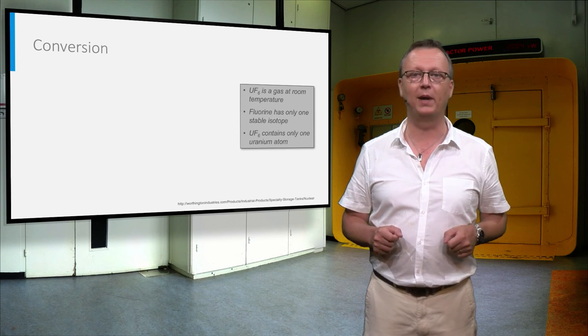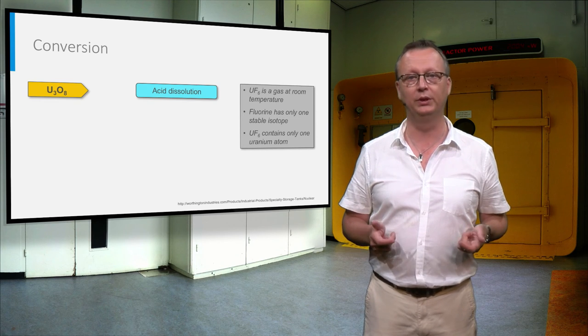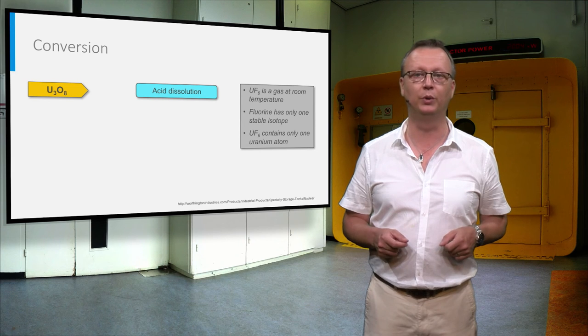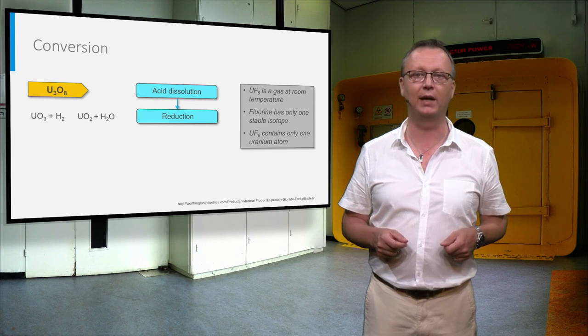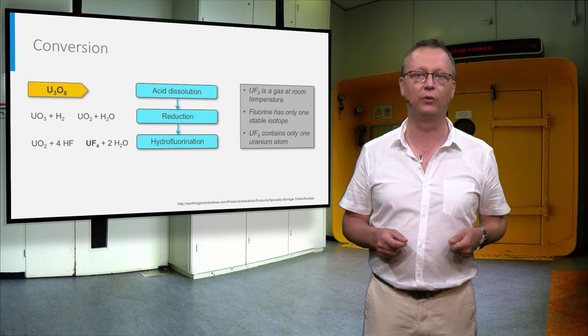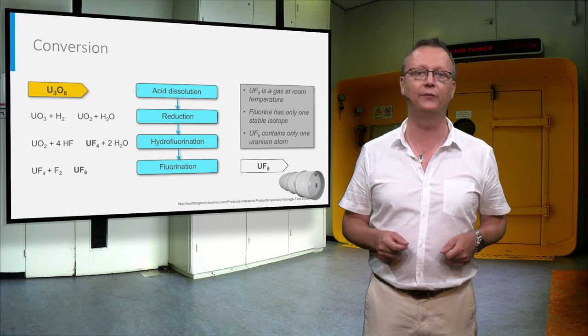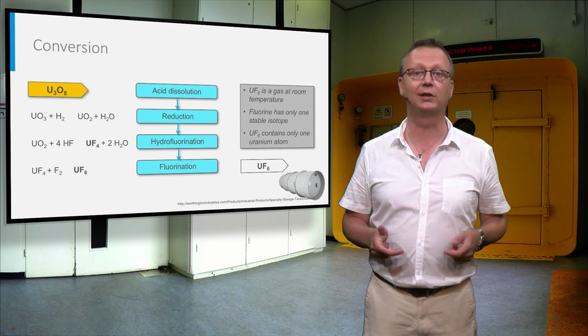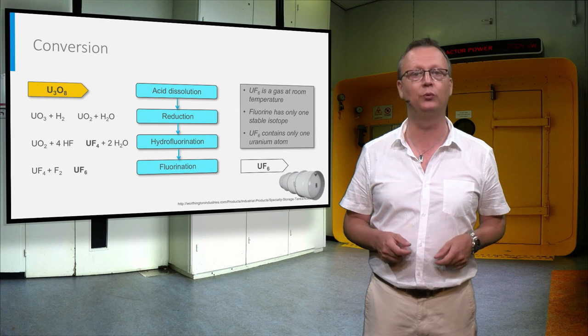UF6 is produced by dissolving the yellow cake to refine it from decay products to yield UO3, which is reduced to UO2 with hydrogen. This UO2 is then reacted with gaseous hydrogen fluoride to form UF4, which is subsequently reacted with fluorine gas to yield UF6, which is stored as a slightly pressurized liquid in special tanks that can be transported to the enrichment plants.